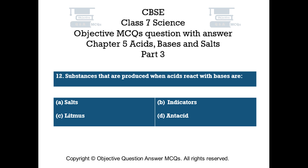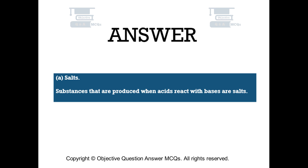Question number 12: Substances that are produced when acids react with bases are. Option A: salts. Option B: indicators. Option C: litmus. Option D: antacid. The right answer is option A — salts. Substances that are produced when acids react with bases are salts.